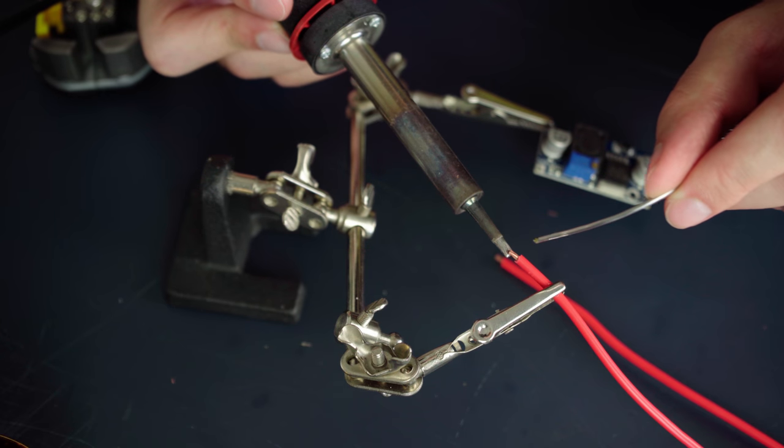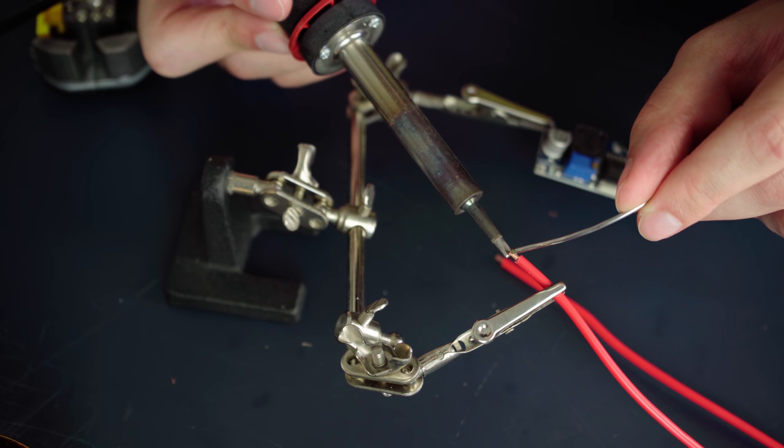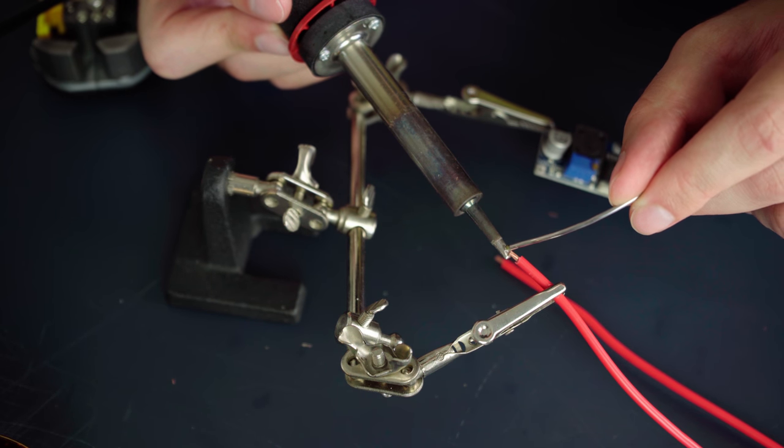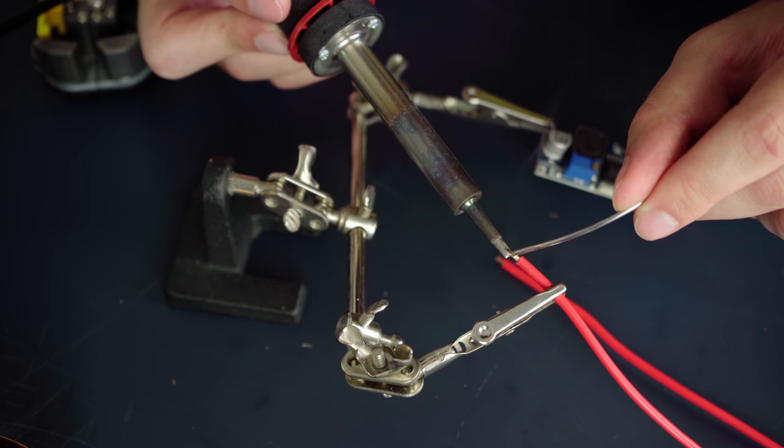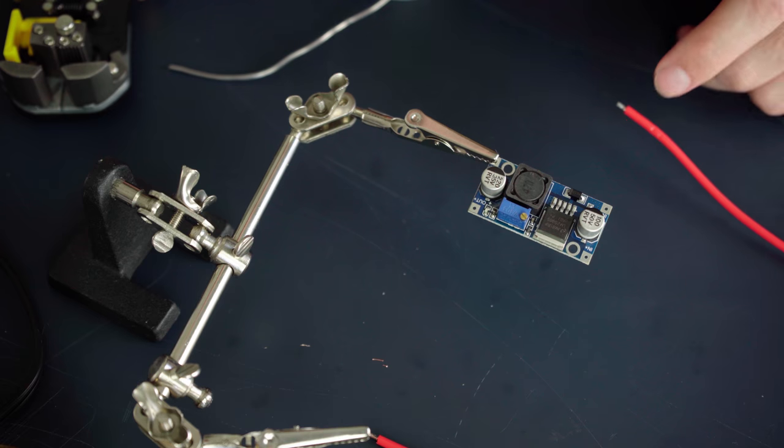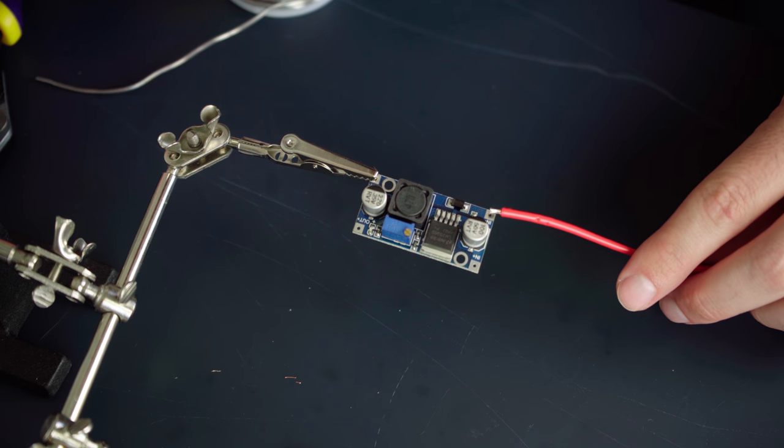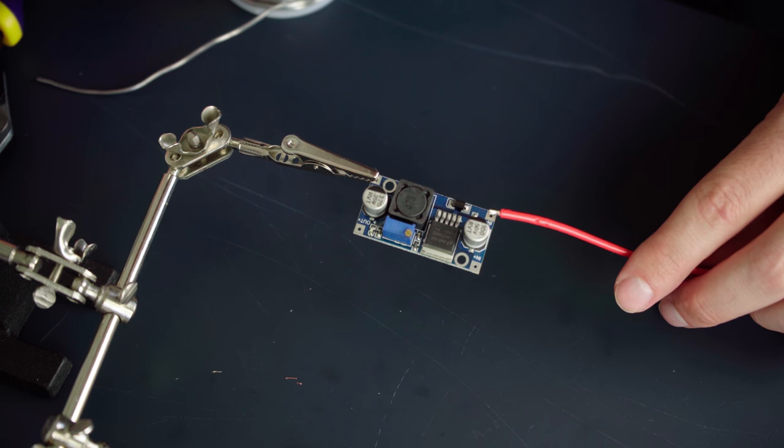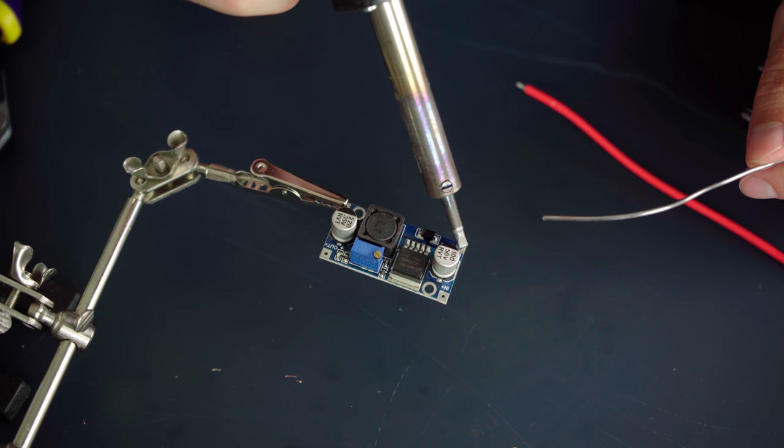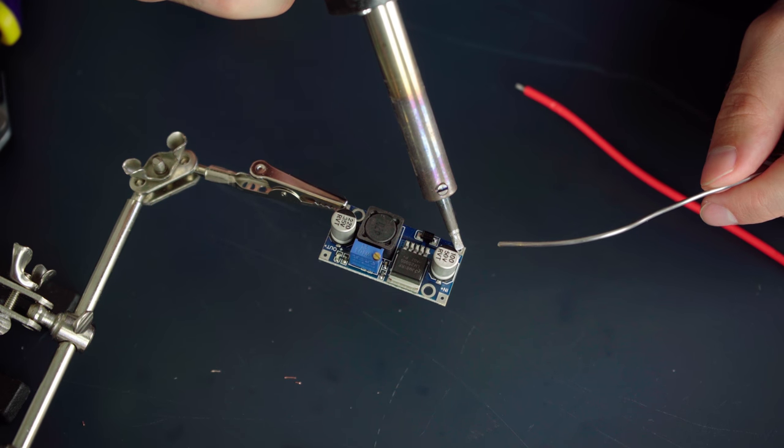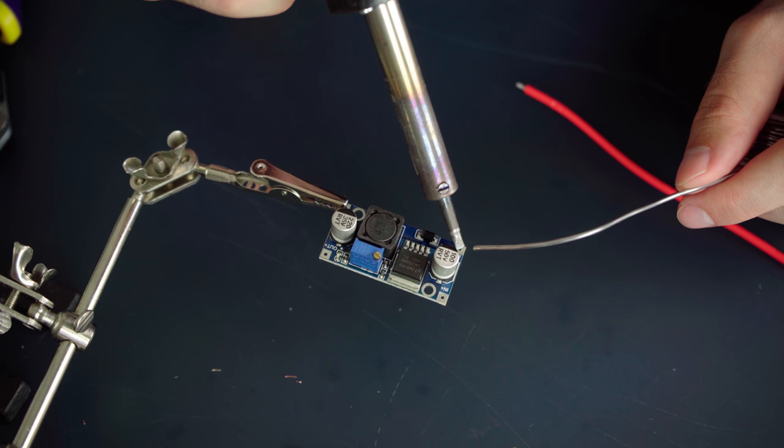After that we're going to tin our wires. So you just heat up the wire and then you have the solder. I touch it kind of to the wire and next to it so that I can see it absorb into it and know when it's done. And then we're gonna want to do the same thing to these metal plates. I cut the wire so that it fits exactly on there and doesn't hang over. And then you just heat up the spot that you're gonna want to solder on the buck converter.